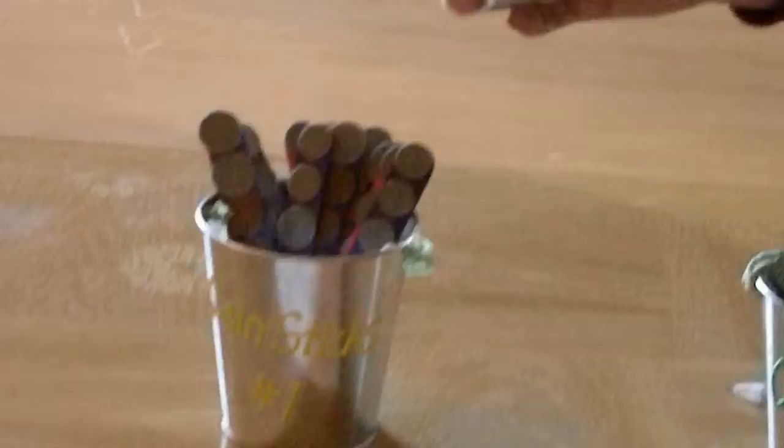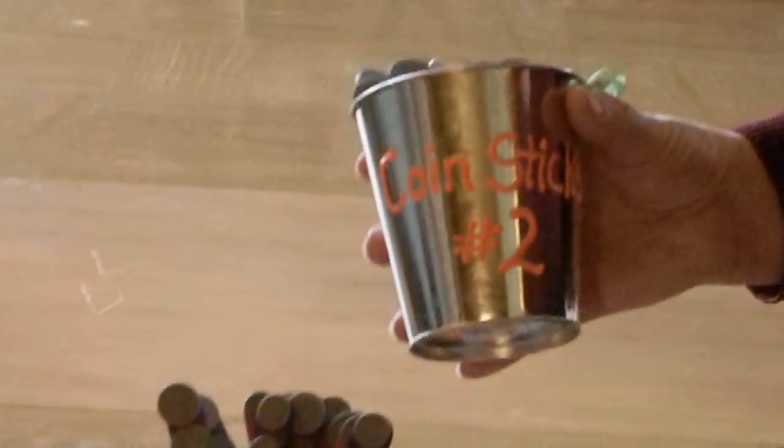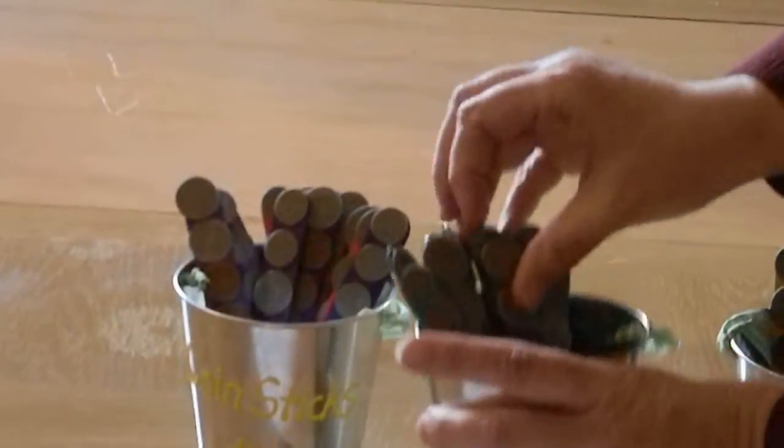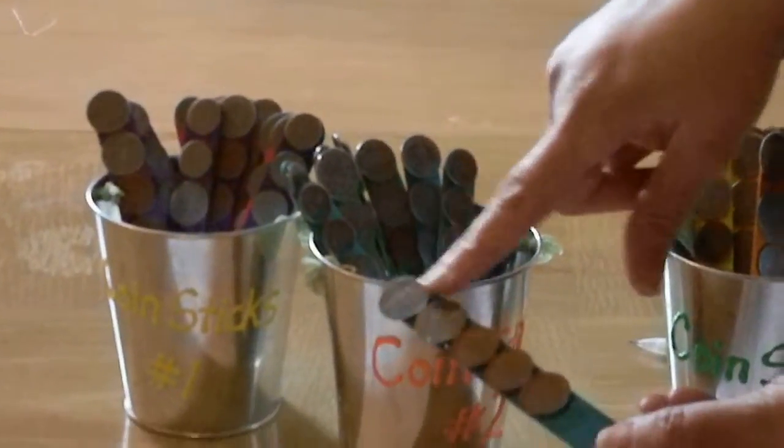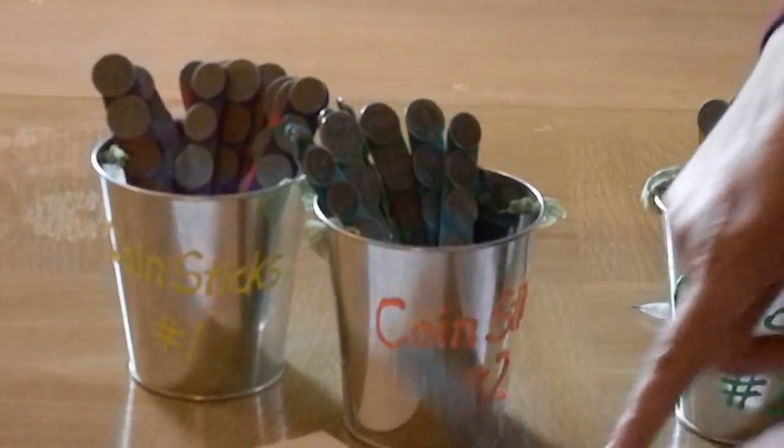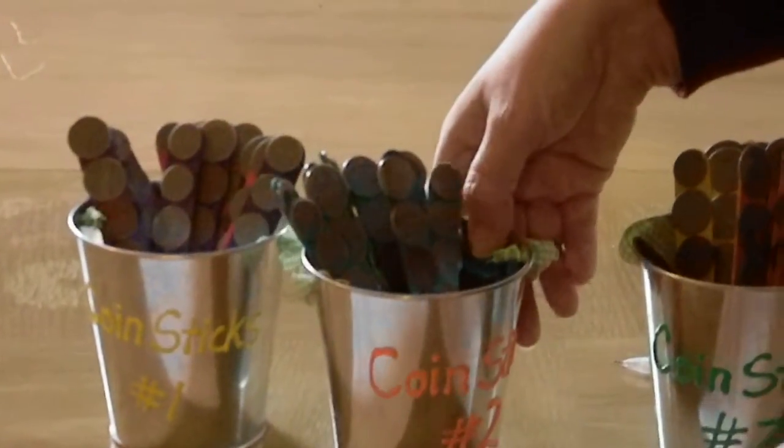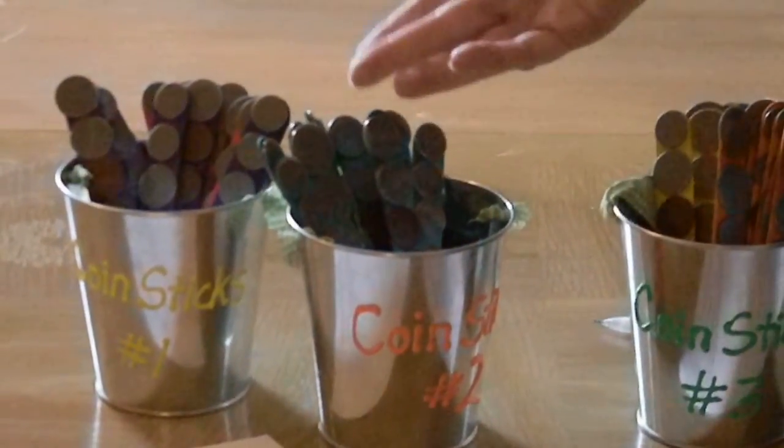So basically what they would do is say I'll use this one since I wrote counted pail number two they would say okay I counted pail number two and they would write that and then they would choose a stick and then they would count the coin so this one has 13 cents so then a number five they would write 13 cents.